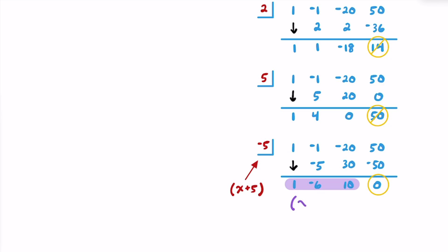The remaining values from synthetic division — 1, negative 6, and 10 — tell us the other factor of this cubic polynomial. That's going to be x squared minus 6x plus 10. So if we multiply the linear factor x plus 5 by the quadratic factor x squared minus 6x plus 10, we get back the original cubic polynomial.